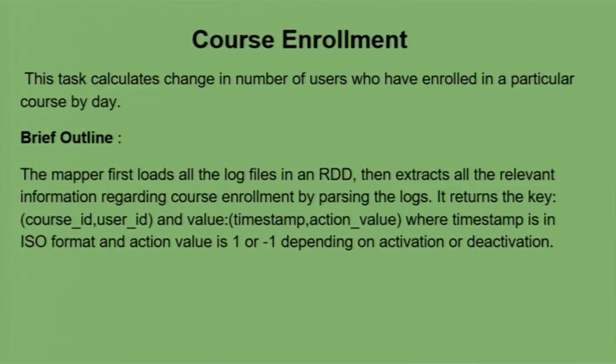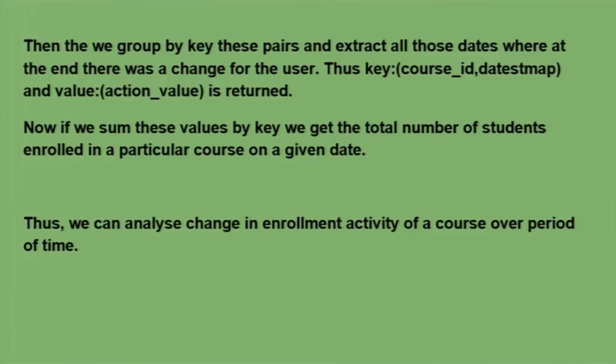Whenever a user enrolls or de-enrolls, a log event is generated with the event type indicating whether they enrolled or de-enrolled. These are loaded into an RDD as key-value pairs corresponding to course ID, user ID, timestamp, and an action value of +1 or -1 for activation or deactivation. These values are passed to a mapper where all timestamps are sorted and the last value — the status of the user at end of day — is retrieved, so that summing those values gives the net change in enrollment per day, per user, per course.